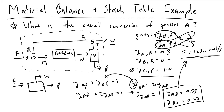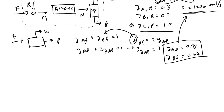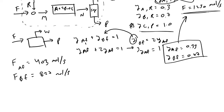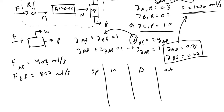Now we can get the molar flow rate of each species in the feed. FAF = 0.33 × 1230 = 403 moles per second of species A. Doing the same calculation for species B gives FBF = 827 moles per second. With these values, we're going to construct what we call a stoichiometric table, with columns for species, inlet flow, change, and outlet flow.